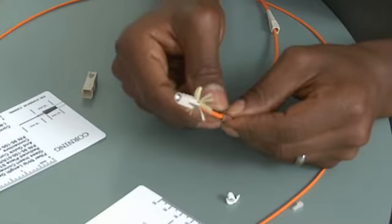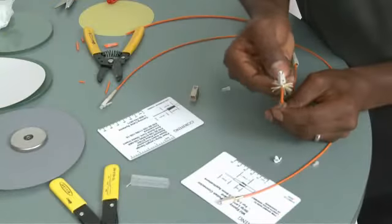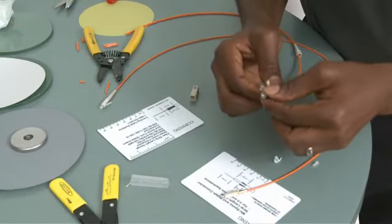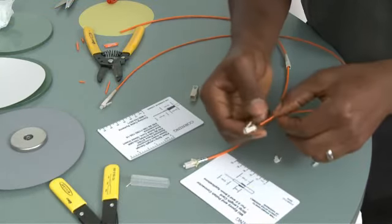So slide the crimping band back, and then flare the fiber around the threaded area of the connector, and then slide the crimp band over. Do the same thing for the LC, and now we're ready to crimp.